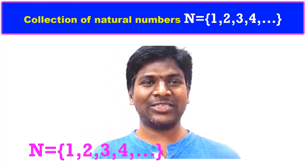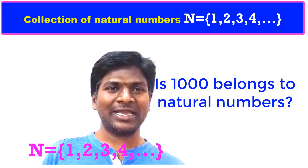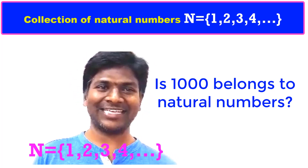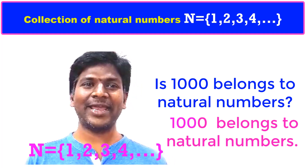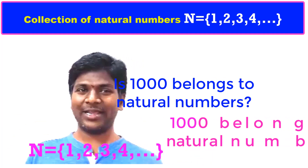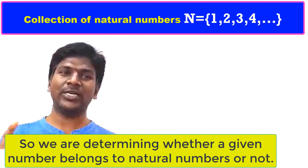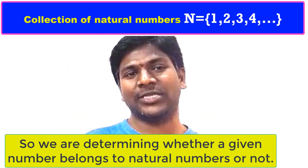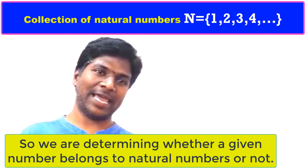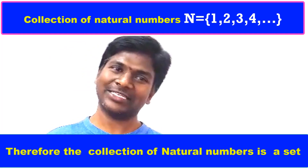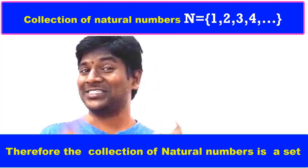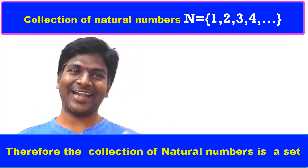Zero is not in the group of natural numbers. What about 1000? Yes, 1000 is also in the group of natural numbers. We can determine whether any given number is in the collection or not. Both conditions of well-defined are satisfied. Therefore, the group of natural numbers is a set.